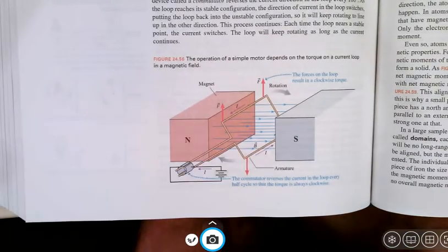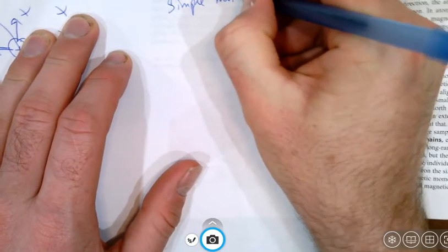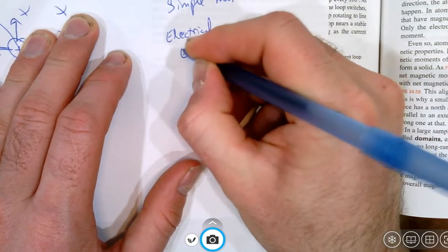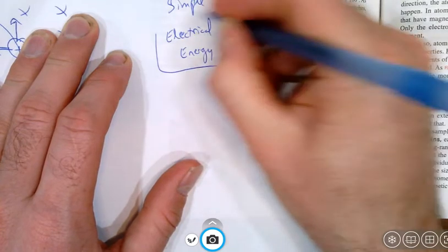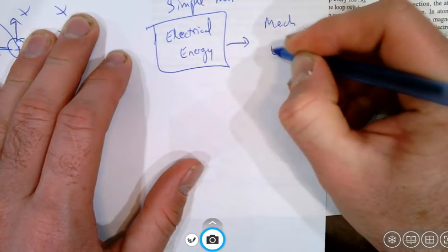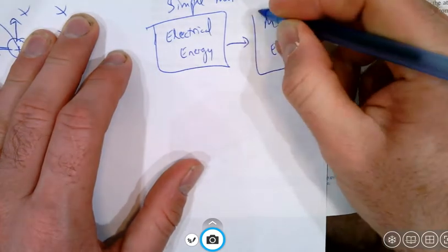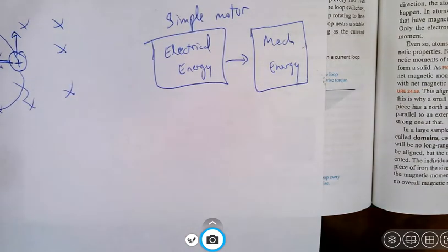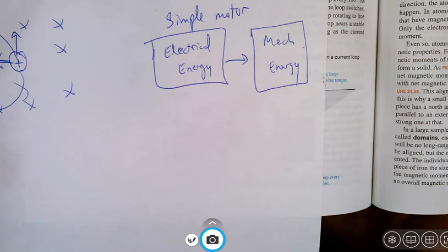A simple motor is a way to turn electrical energy from a battery into mechanical energy. This is a huge revolution for humans — if you carry around a battery, you can make a car go places. Anything involving motion: if you can store energy as electrical energy and convert it to mechanical energy, you can get a lot of interesting things done.